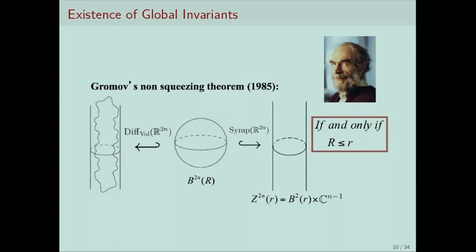The most striking example of this difference is given by Gromov's famous non-squeezing result. It states that if you take a Euclidean ball B in R^{2n} with radius R, and Z is a cylinder based on a two-dimensional disk of radius r, then if we try to symplectically embed the ball inside the cylinder, it is impossible unless the radius of the ball is already less than or equal to the radius of the cylinder. In sharp contrast with volume-preserving transformations — where you can squeeze an arbitrarily large ball into such a cylinder — in the symplectic world there are mysterious obstructions which prevent such an embedding.